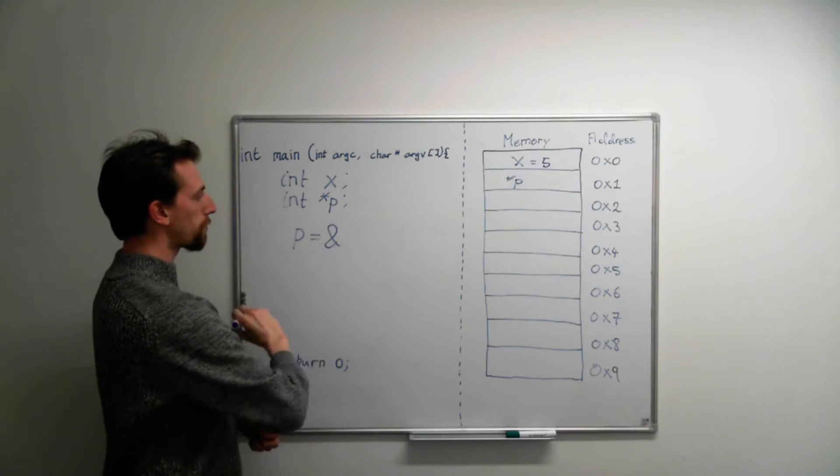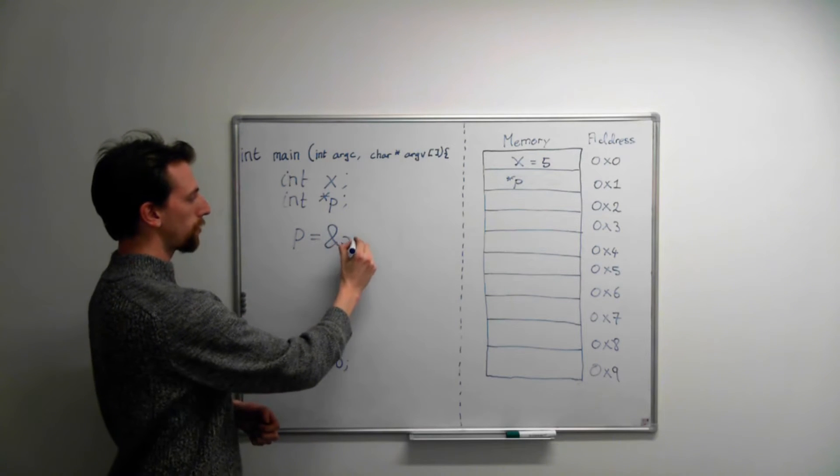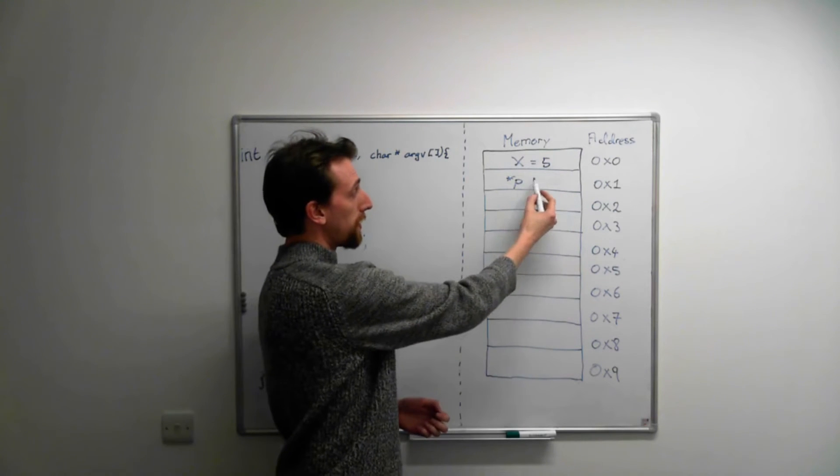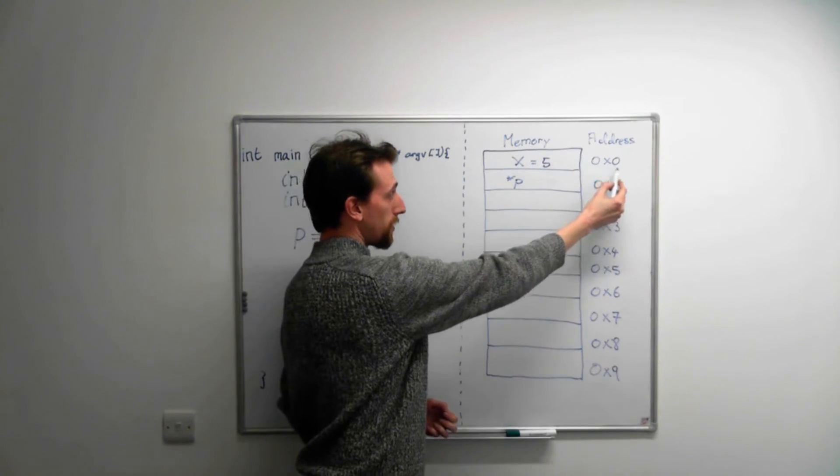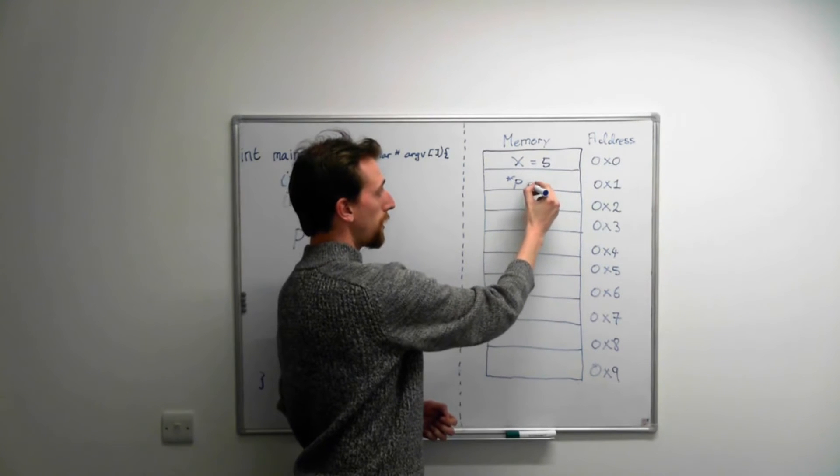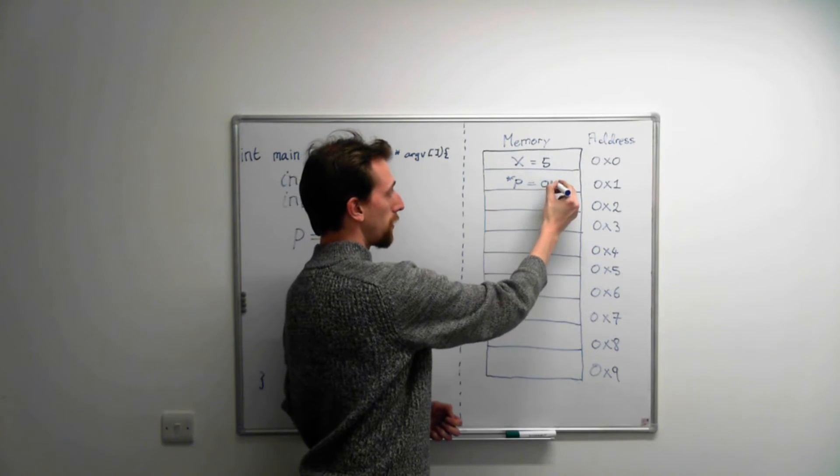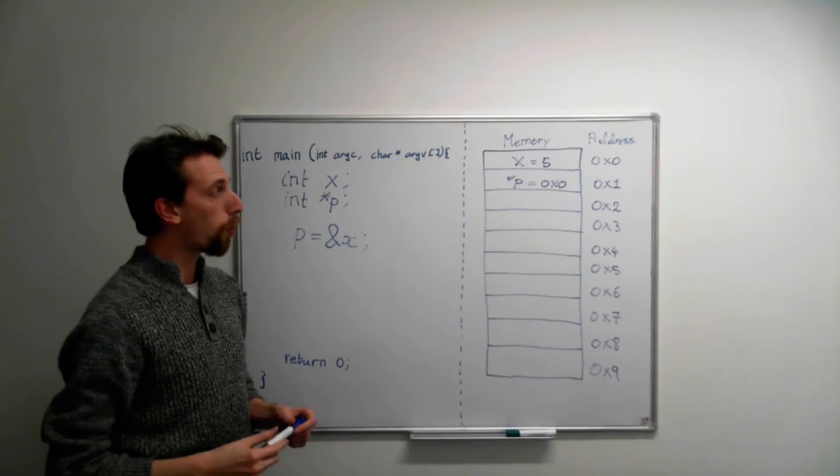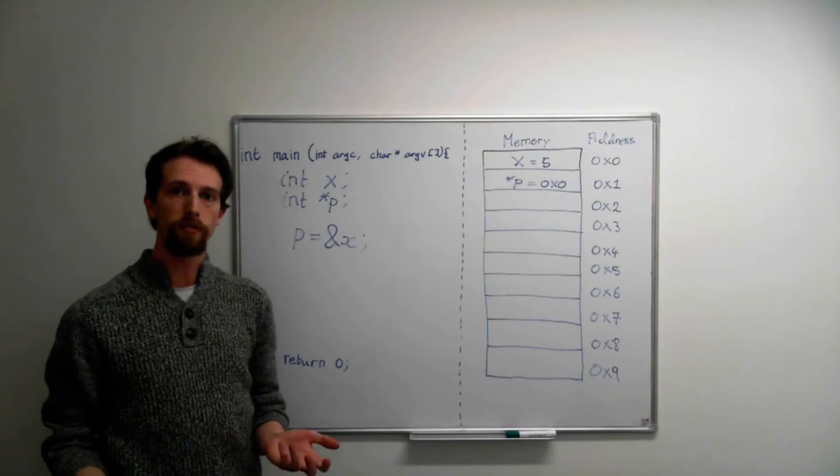But what we can say is that p is equal to the address of x. When we do that using the ampersand symbol, p is equal to the address of x. So p, in this case, x has the address 0x0. So p will get the value 0x0. So p is pointing to where we can find x.